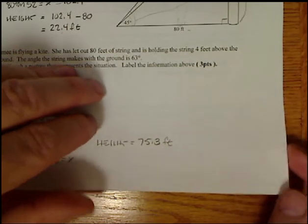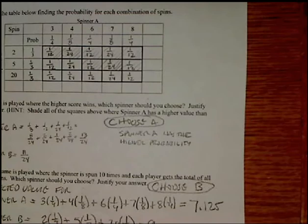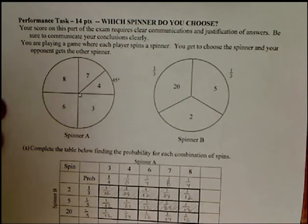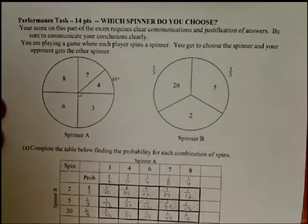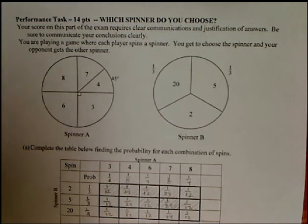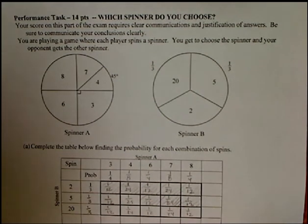Okay, the last problem is the performance task, and this is our probability problem. So we have two spinners, and we're going to try to figure out which one you're going to choose. Well, there's two different games basically played. You have one person playing against another. You're going to choose a spinner, and the opponent you're playing with chooses the other. But we have two different games we're basically going to be working with. So the first thing is, we want to see what kind of combinations we have of the two spinners. Because that's going to help us to figure out what different parts are. So that's what the first part is.